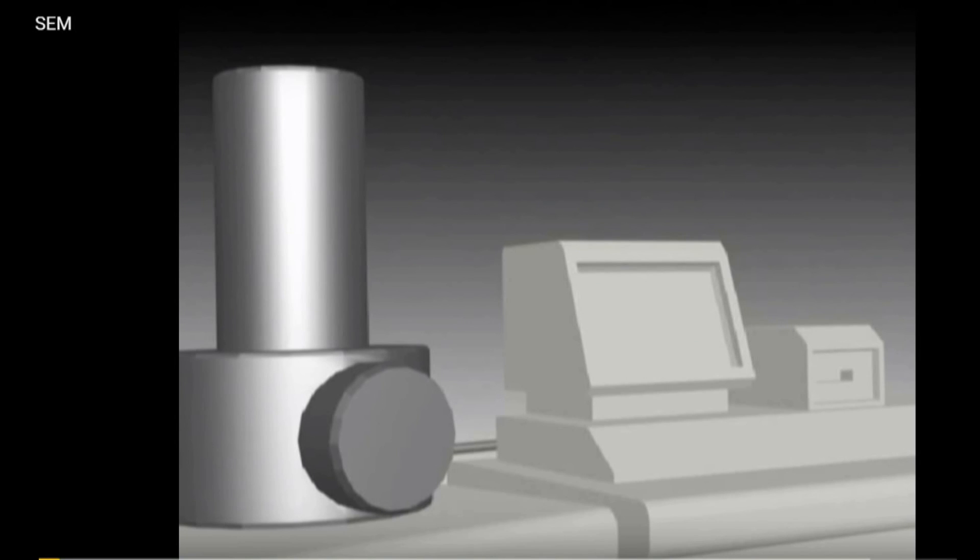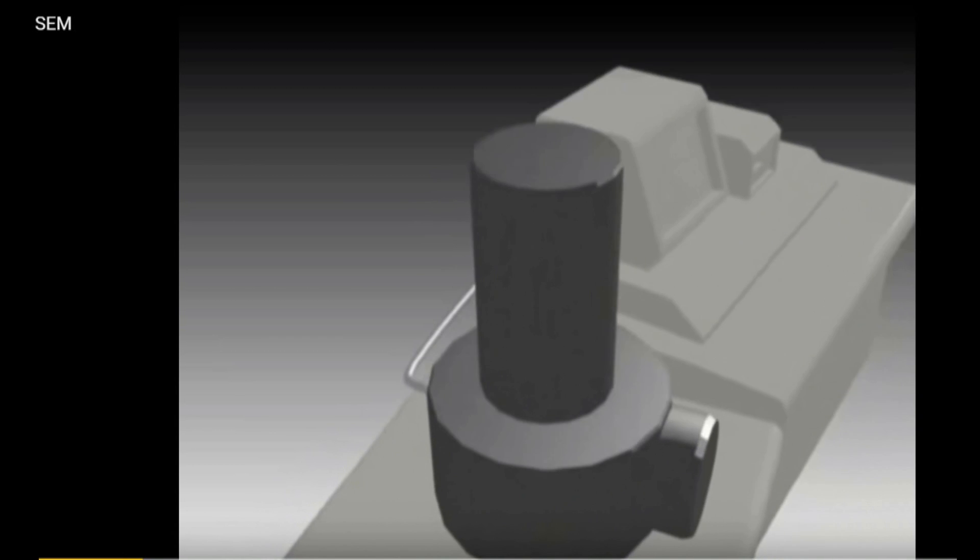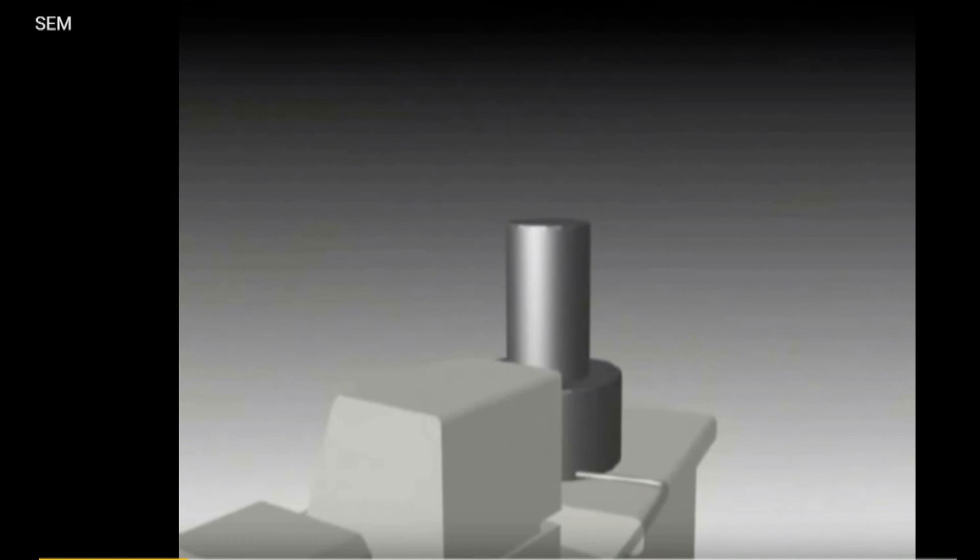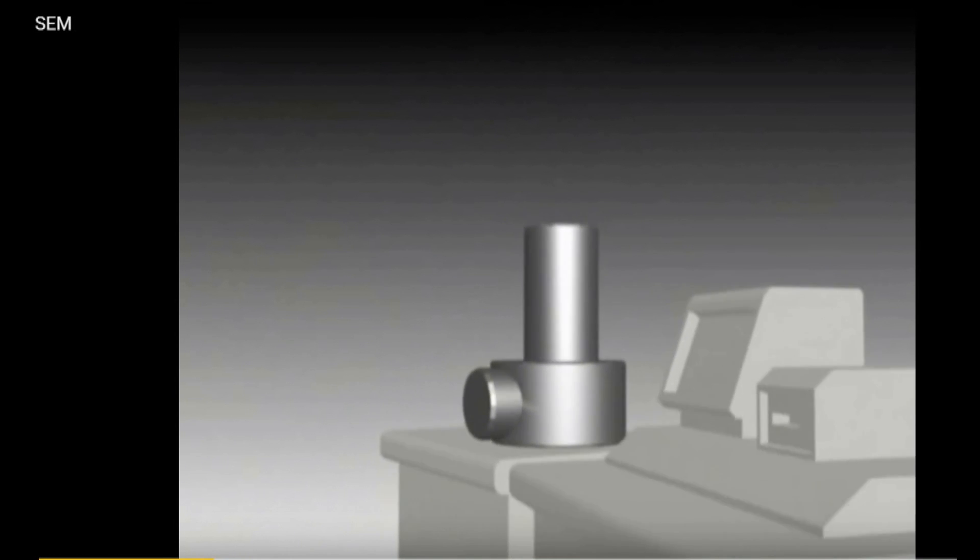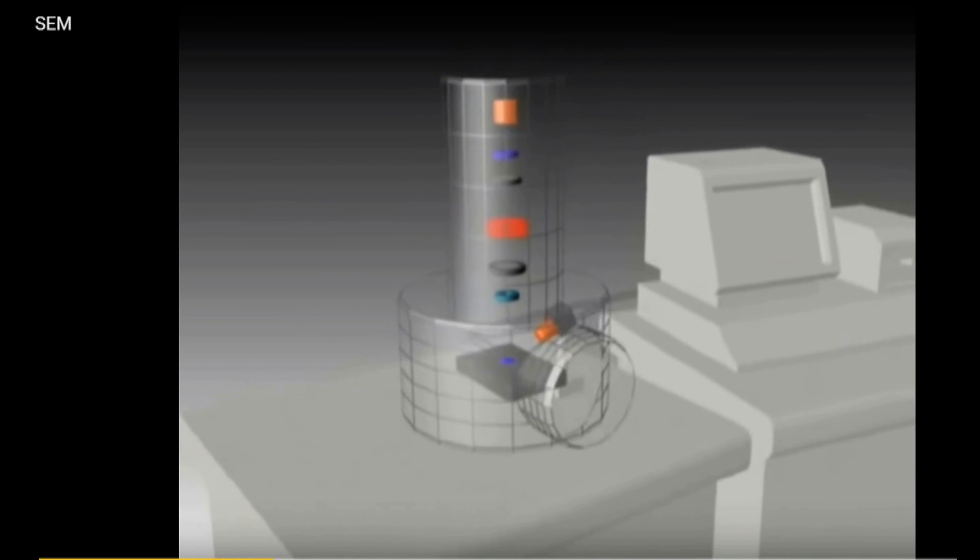The upper part of the schematic structure is the so-called column. It is used to generate an electron beam. The lower part consists of the specimen chamber. The flange leading to the high vacuum pump is at the bottom of the structure. Thereby, vacuum is generated inside the whole microscope.